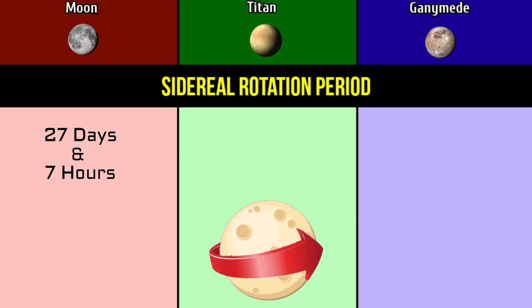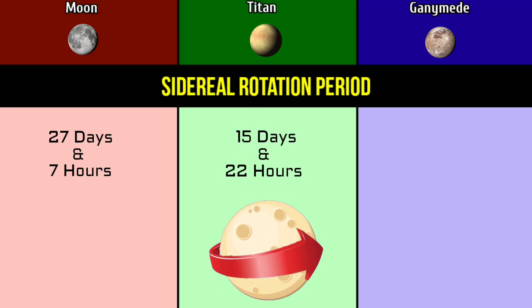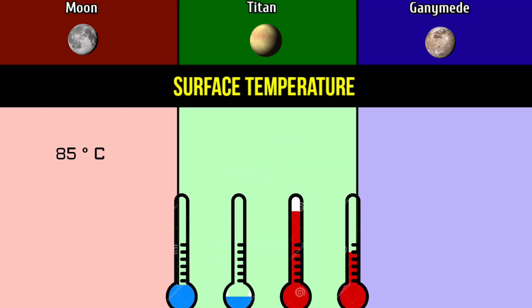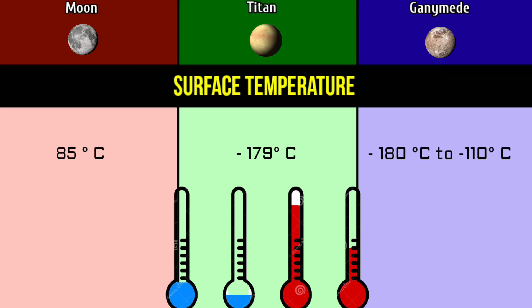Sidereal rotation period: 27 days and 7 hours for the Moon; 15 days and 22 hours for Titan; 7 days for Ganymede. Surface temperature: 85 degrees Celsius for the Moon; minus 179 degrees Celsius for Titan; minus 180 to minus 110 degrees Celsius for Ganymede.